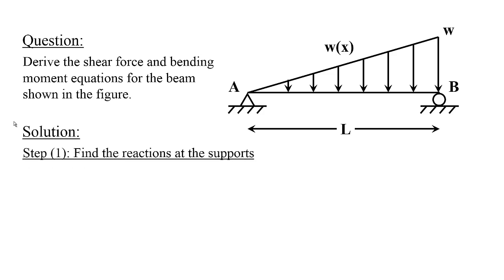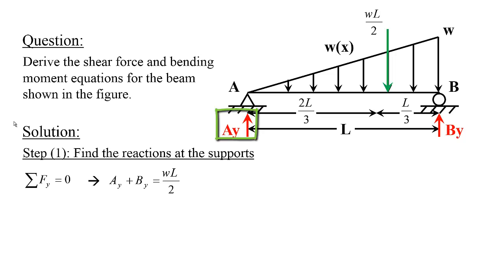Step one: we find the reactions at the supports. We have two reactions, AY and BY. To find the reactions, we concentrate any distributed load. We will concentrate the load by finding the area of the triangle, and knowing that the concentrated load will act at a distance L over 3 from the right and 2L over 3 from the left. Then we do the summation of the forces in the y direction.